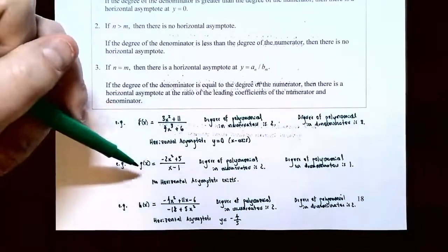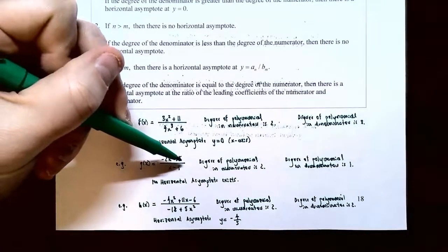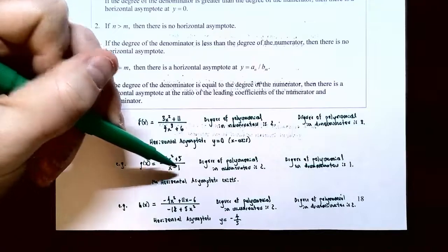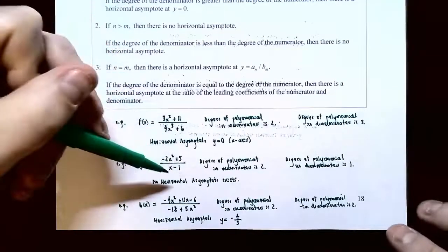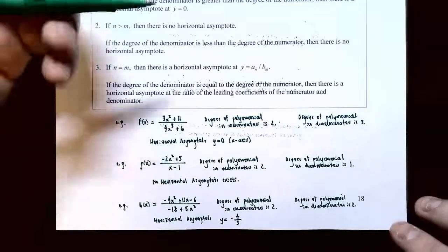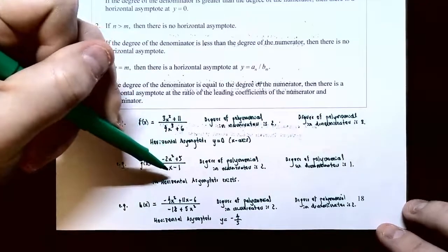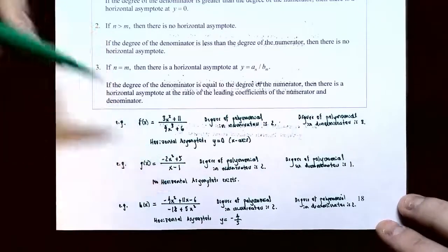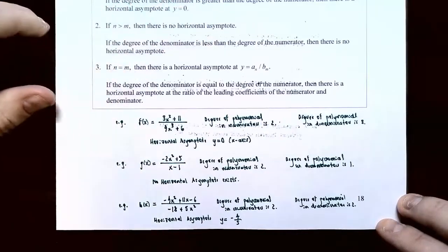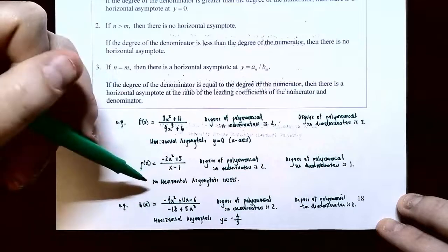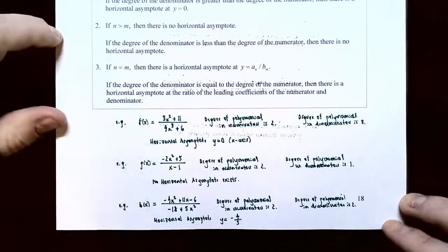Case two example: g(x) equals (−2x² + 5) / (x − 1). The degree of the numerator is two and the degree of the denominator is one. Since the numerator's degree is larger — case two — there is no horizontal asymptote. The graph will not level out towards a horizontal line on either the far right or far left end.